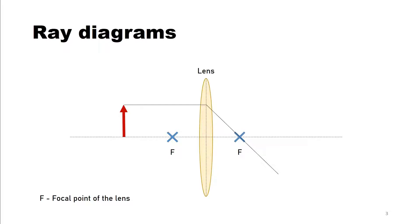After that we need to draw a second line, again from the tip of the object. And this time we draw it throughout the optical center of the lens. And every time when you draw something through the optical center, then the light beam will not be refracted. So it goes straight through it.